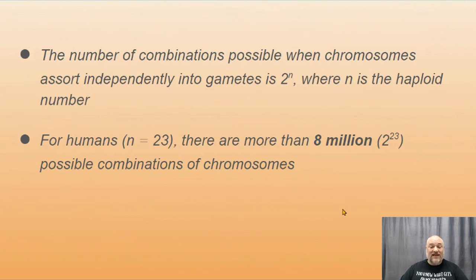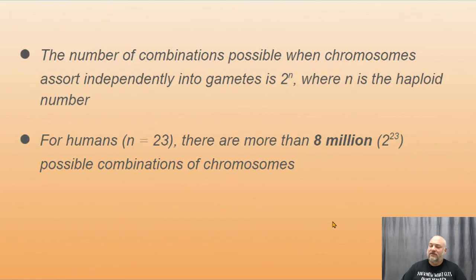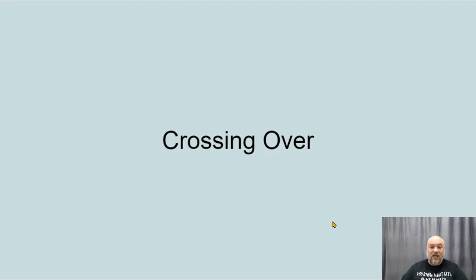The number of possible combinations is 2 to the power of n, where n is the haploid number. For humans where n equals 23, there are about 8.4 million possible chromosome combinations — just from one individual's gametes. So you have 8.4 million different possible eggs combined with 8.4 million different possible sperm in fertilization, and the possibilities are exponential.